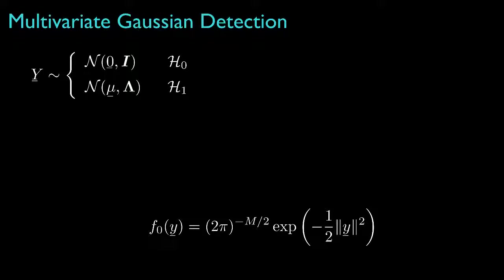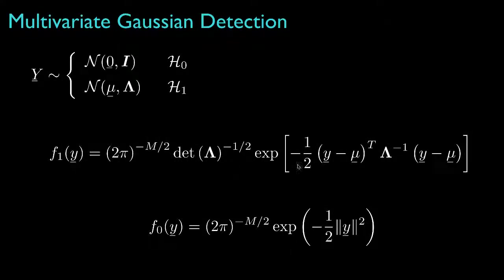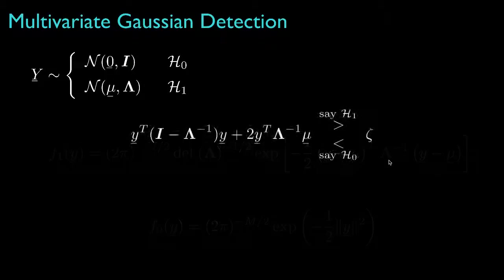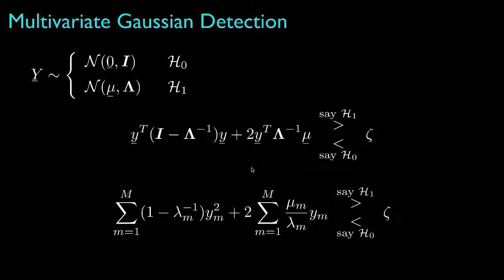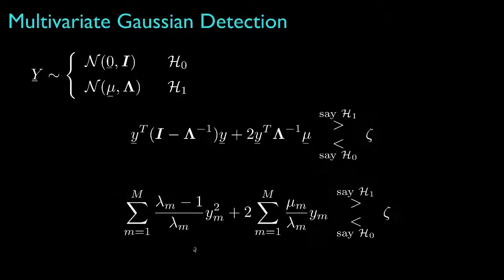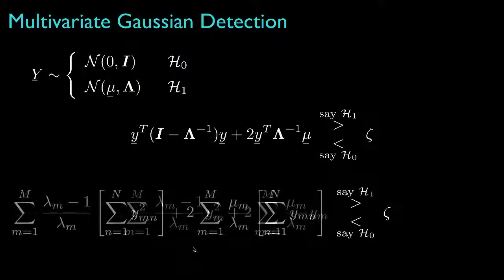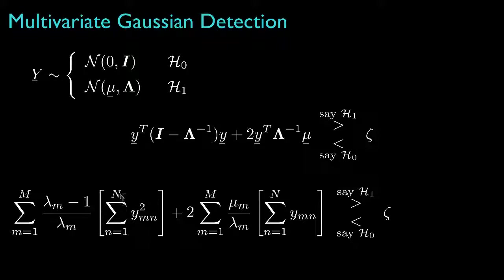Accordingly, the density for hypothesis 0 will look like this, and the density for hypothesis 1 will look like this, with a mean mu and a diagonal covariance lambda. The likelihood ratio test would look like this, which in terms of the individual data values and the individual elements in the diagonal covariance and the mean vector might look like this, or we could rearrange terms and it would look like this. Sometimes we'll have several independent realizations of the observed random vector, and when that happens, we can pre-process each of those so that the resulting test statistic looks like this, where capital N is the number of independent realizations.